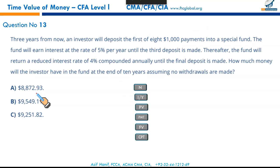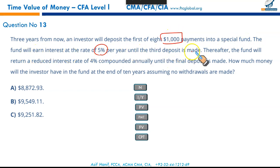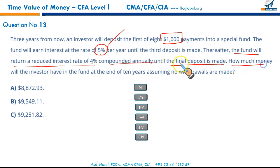The fund earns 5% for the first three payments, then the interest rate is reduced to 4% compounded annually for the remaining five payments, until the final deposit is made. How much money will the investor have in the fund at the end of ten years assuming no withdrawals? This question will be done in two parts.